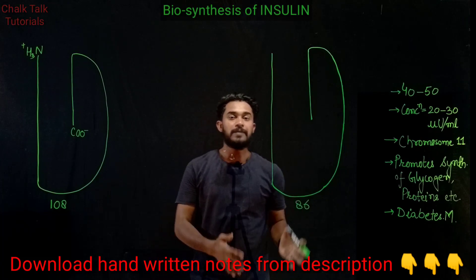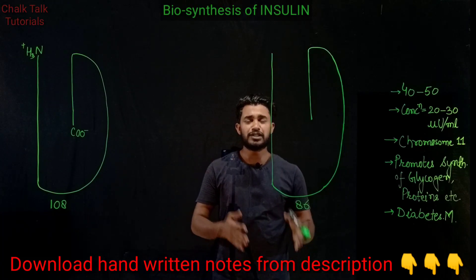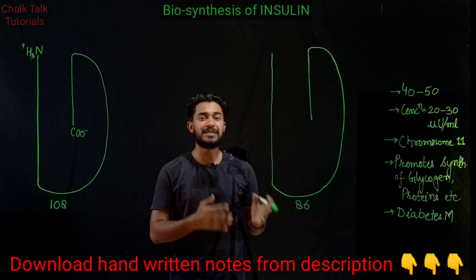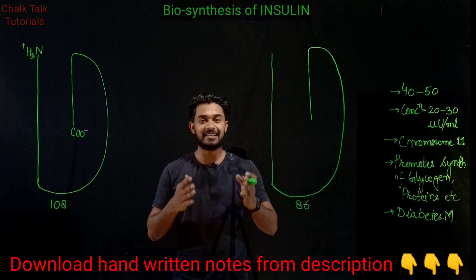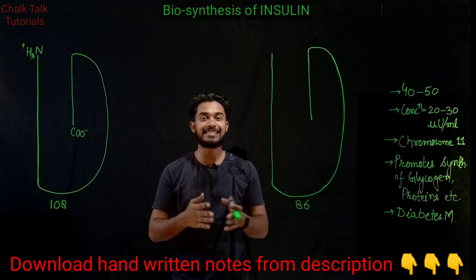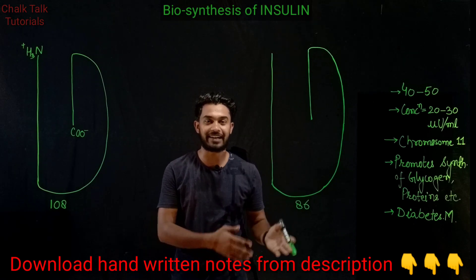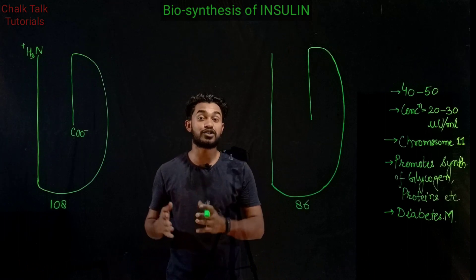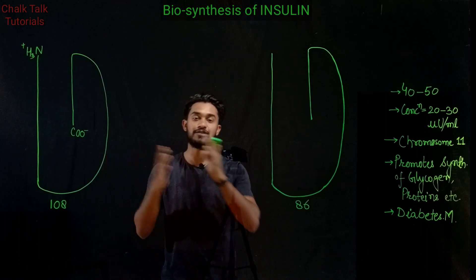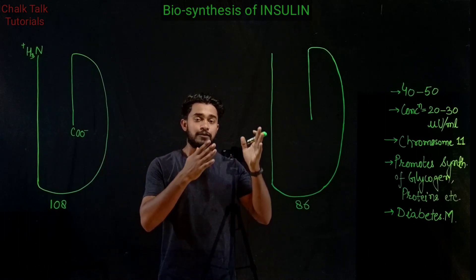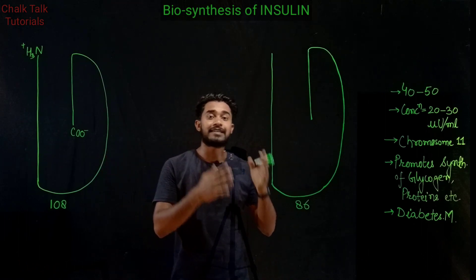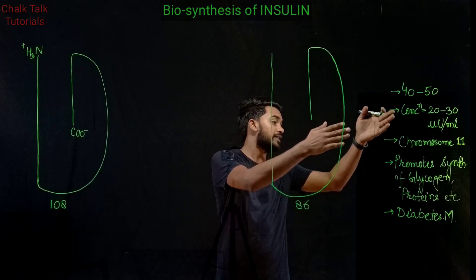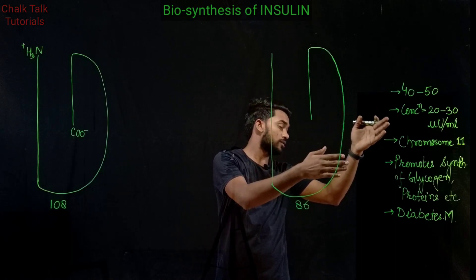Insulin is a polypeptide hormone produced by the pancreas. Specifically, cells known as the islets of Langerhans in the pancreas are responsible for the production of insulin. Before moving to the next step, we have to understand some important information.